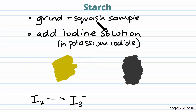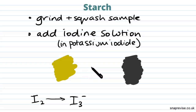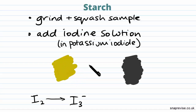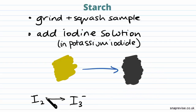To test specifically for starch, all you need to do is add iodine solution, which will be dissolved in potassium iodide. If there is starch in your mixture, you will see a color change from a yellow-brown color to a more blue-black color.